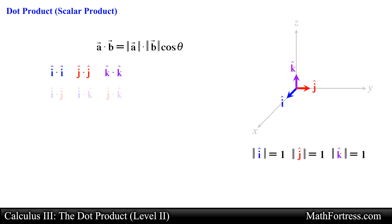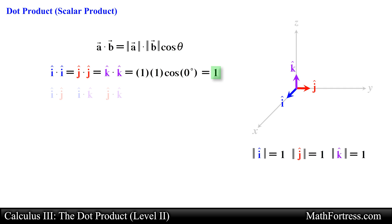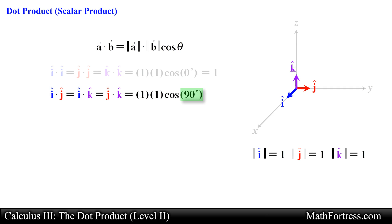The first three dot products involve vectors that are parallel to one another — in other words the angle between them is 0 degrees. So to calculate the dot product we simply multiply the magnitudes of the vectors, obtaining the scalar 1. For the next three dot products the vectors are orthogonal, forming a right angle. The dot product of orthogonal vectors is equal to 0 since cosine of 90 degrees equals 0.